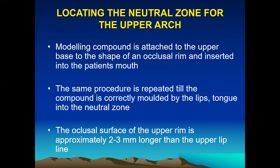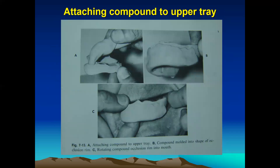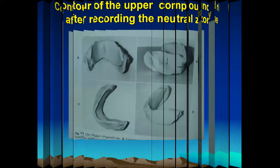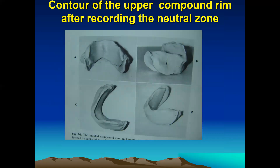Now we locate the neutral zone for the upper arch. The procedure is almost the same — the modeling compound is attached to the upper base in the shape of an occlusal rim and inserted into the patient's mouth. The same procedure is repeated until the compound is correctly molded by the lips, tongue, and cheeks into the neutral zone. The occlusal surface of the upper rim is approximately two to three millimeters longer than the upper lip line. This is the final occlusal rim for the upper arch.